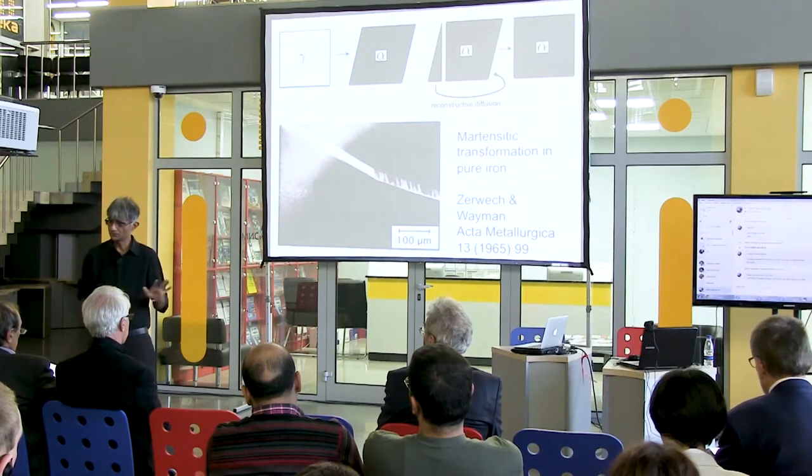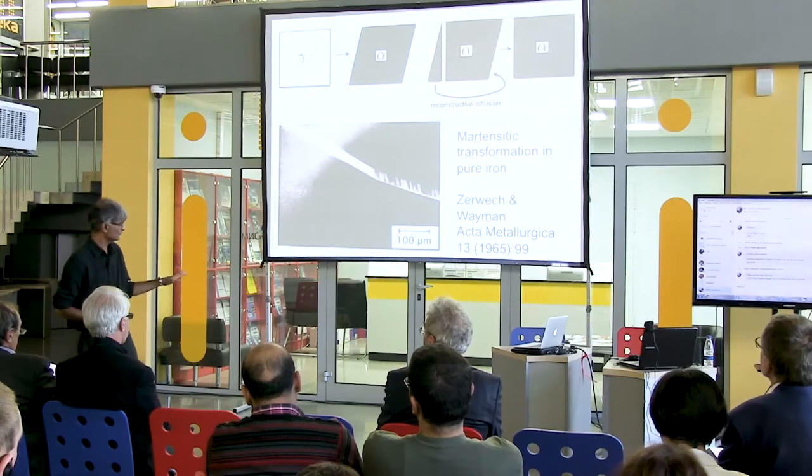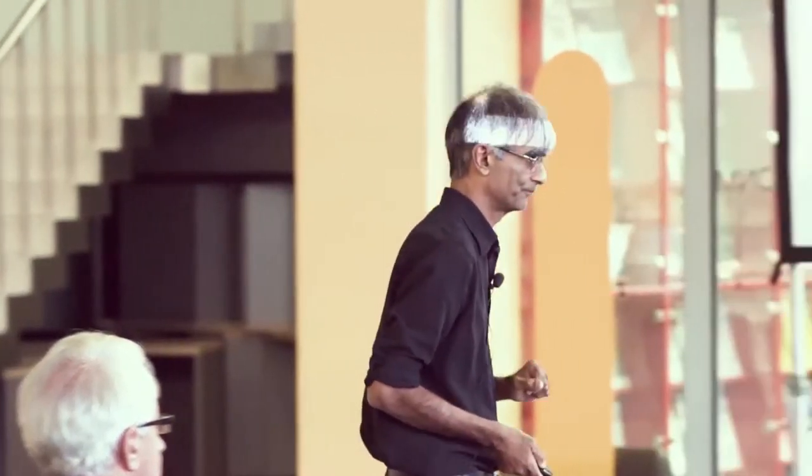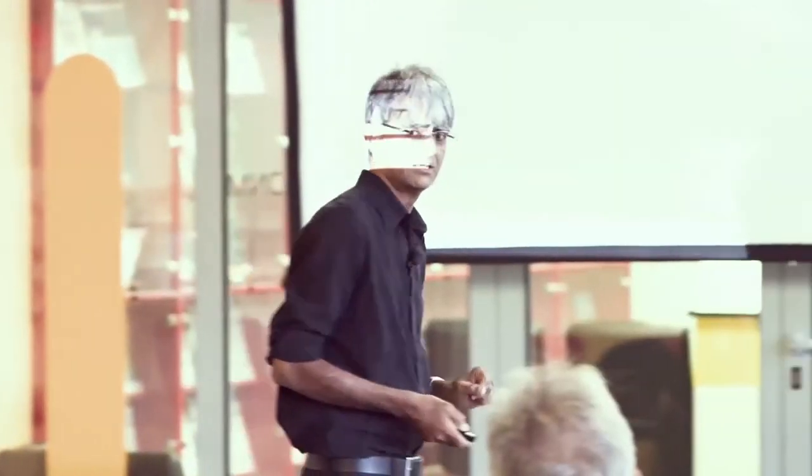This is a single crystal of pure iron which was straight. It had then been heated extremely rapidly and it underwent a diffusionless transformation which resulted in this change of shape. So in pure iron, you can distinguish between martensite, which is diffusionless, and ferrite, which involves long-range diffusion of atoms. The mechanism of transformation is independent of whether or not you have alloying elements inside your steel.